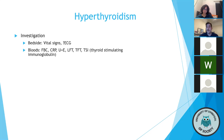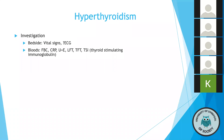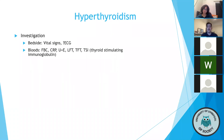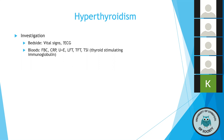If TSH is high alongside elevated thyroid hormones, that indicates a secondary cause, as TSH is working hard to stimulate the gland. If TSH is low, that indicates a primary cause — the gland working hard on its own despite no stimulation. TSIs — thyroid stimulating immunoglobulins — are a blood test specific to Graves' disease, marking those antibodies that bind to the gland and result in increased thyroid secretion.